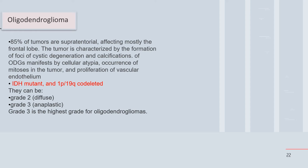On molecular biology, oligodendroglioma may show IDH mutation and 1p/19q co-deletion. It can be grade 2 (diffuse) or grade 3 (anaplastic), with grade 3 being the highest grade oligodendroglioma. Confirmed oligodendrogliomas are rare tumors that go paraventricular and are typically low grade.